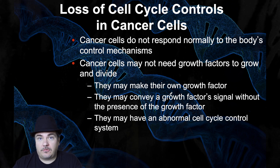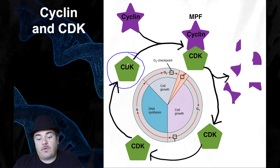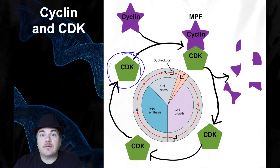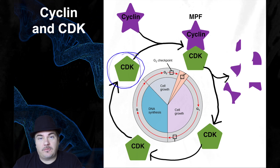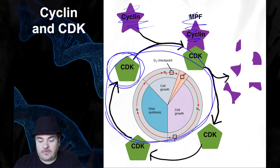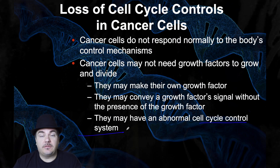Cancer cells may also have an abnormal cell cycle control system. For example, we all have CDK inside our cells encoded by a gene. CDK is normally always present but switched off. If a mutation changes that gene so CDK is always turned on, the cell will never stop going through the cell cycle — it will be constantly dividing — regardless of whether cyclin is present. That's an example of a mutation that could lead to a cell becoming a cancer cell.